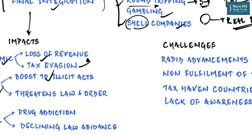Money laundering and criminal activities form a vicious cycle: the quest to legalize illicitly earned money leads to money laundering, which in turn provides the financial boost or initial capital for further illegal activities and incentivizes more people to take up violence and crime because they see others getting rich through it. This threatens law and order. There are also social impacts — money laundering is directly associated with high levels of drug addiction, as there is a lot of unaccounted wealth, and it leads to declining law abidance as law-abiding citizens lose the incentive to follow the law.